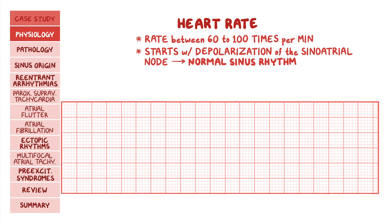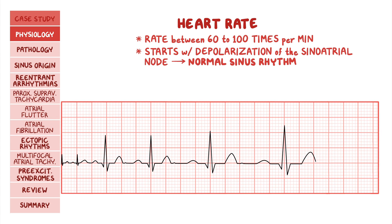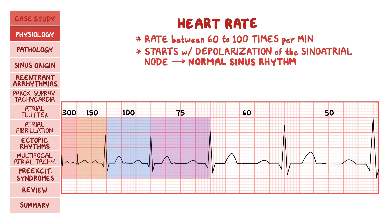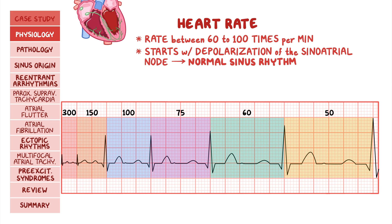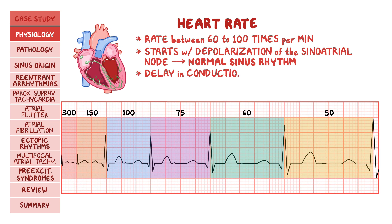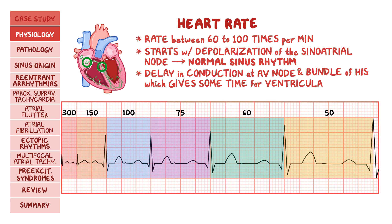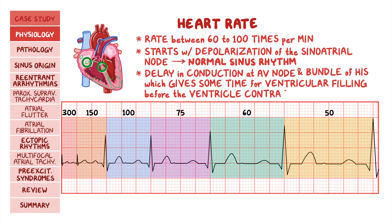One quick way to estimate the heart rate on an ECG is to remember that the heart rate is 300, 150, 100, 75, 60, or 50, depending on whether there's 1, 2, 3, 4, 5, or 6 boxes between R waves. It's important to know that there is normally a delay in conduction at the AV node and the bundle of His, which gives some time for ventricular filling before the ventricle contracts. On the ECG, this is represented by the PR interval, which should be less than 5 small boxes, or 200 milliseconds.